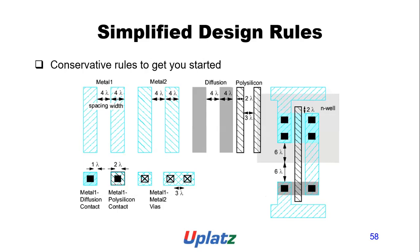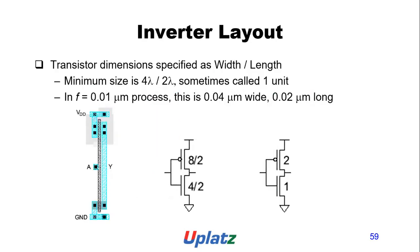Simplified design rules: Metal 1 width is 4 lambda, spacing is 4 lambda. Metal 2 is also 4 lambda width and 4 lambda spacing. Diffusion width is 4 lambda, spacing is 4 lambda. Polysilicon width is 2 lambda, spacing is 3 lambda. N-well is 2 lambda. Metal 1 to diffusion contact is 1 lambda. Metal 1 to Metal 2 via is 3 lambda. The minimum contact size is 4 lambda by 2 lambda, which simplified is called 1 unit. If F equals 0.01 micrometres, a wire is 0.02 micrometres wide with 0.02 micrometre spacing.